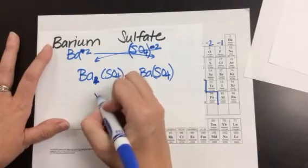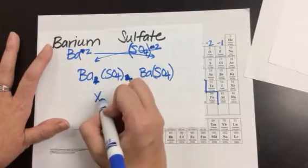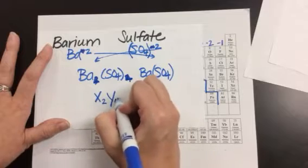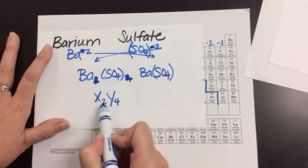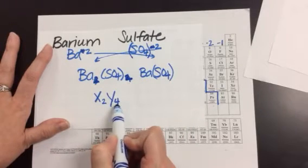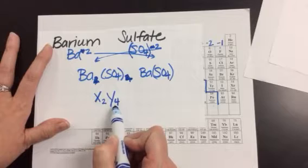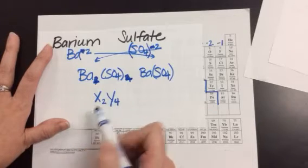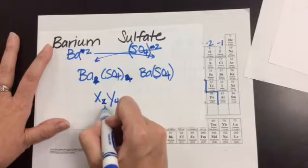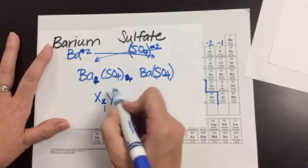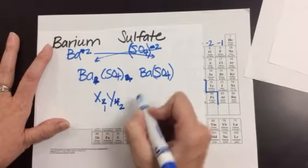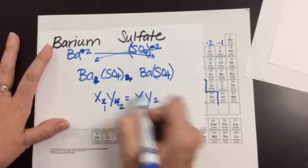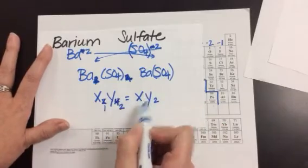If you end up with a compound — say it's element X2 and Y4 — you still have to reduce that down because both numbers are divisible by 2. So 2 divided by 2 leaves you with 1, and 4 divided by 2 is 2. So you would have XY2. You always have to reduce these.